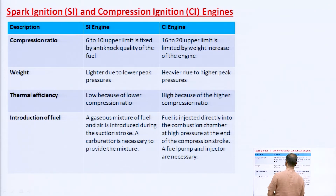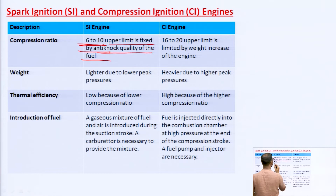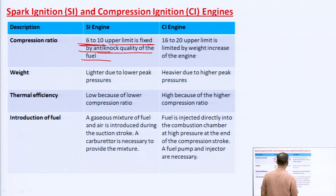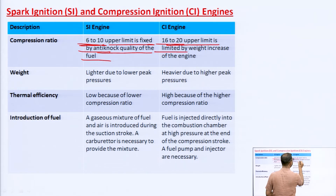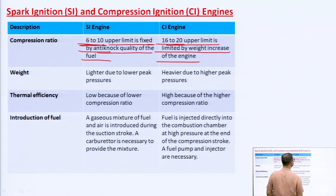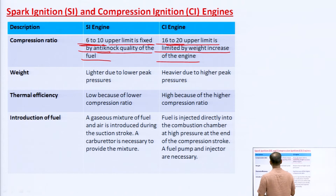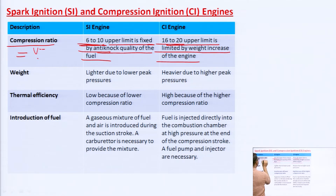Regarding compression ratio: in the case of the SI engine, the compression ratio is 6 to 10. The upper limit is fixed due to the anti-knock quality of the fuel — if the compression ratio is increased further, knocking can occur. In the case of the CI engine, the compression ratio is 16 to 20. The upper limit is limited by the weight increase of the engine. Compression ratio is defined as the ratio of total volume to clearance volume — that is, swept volume plus clearance volume divided by clearance volume.